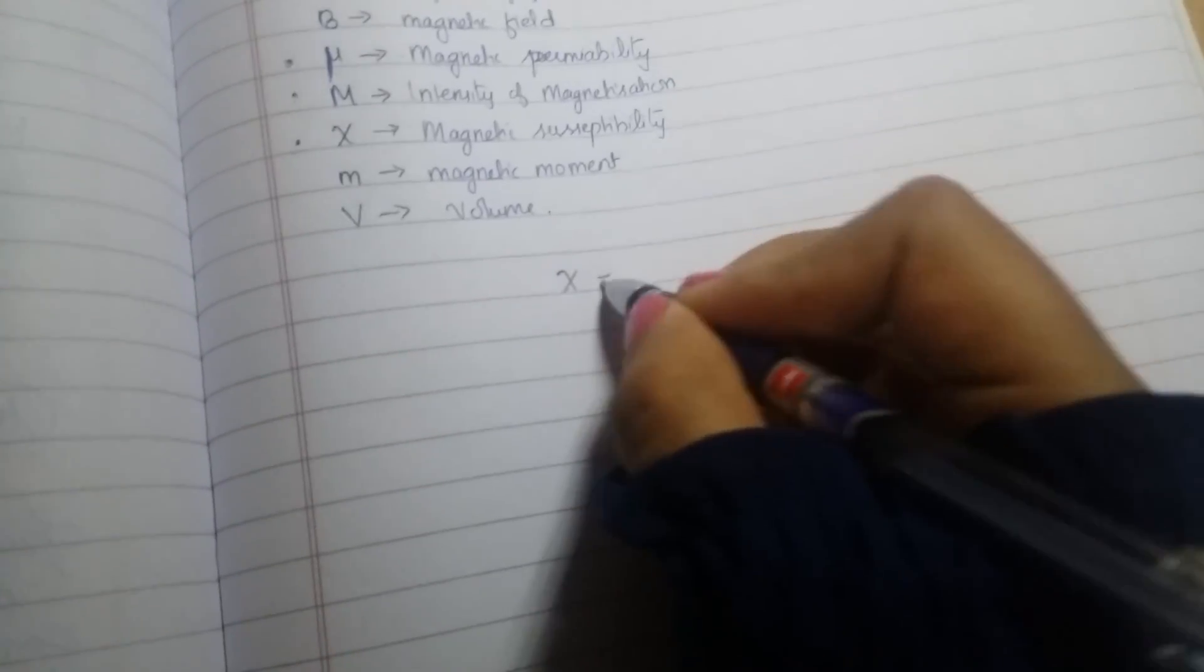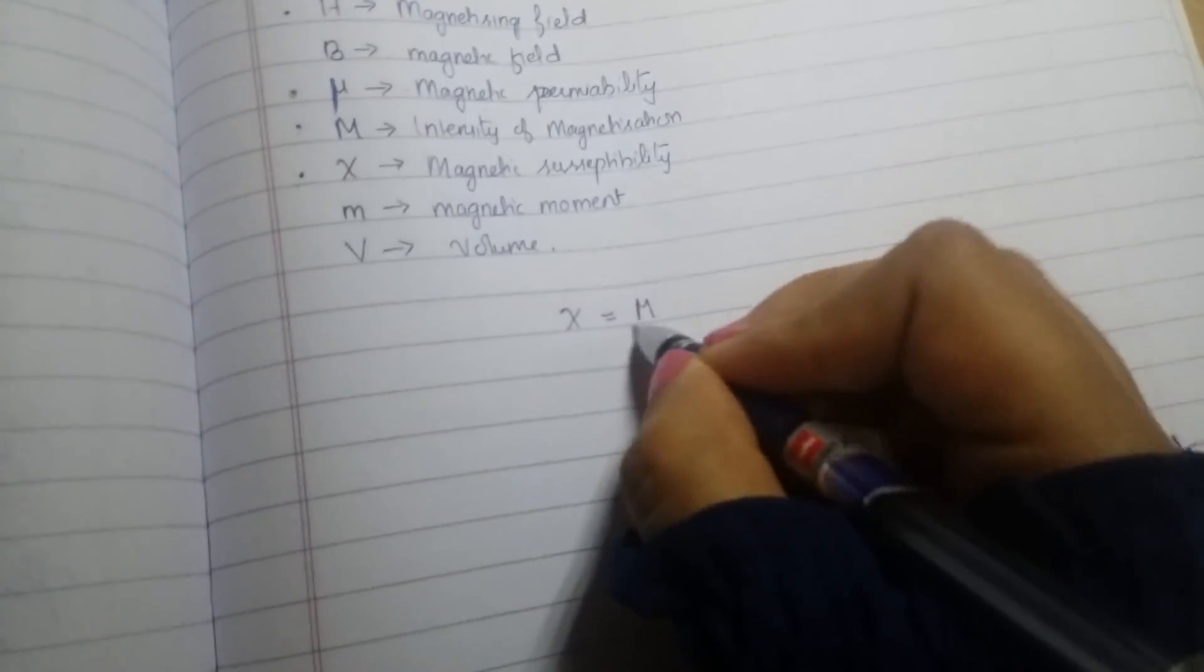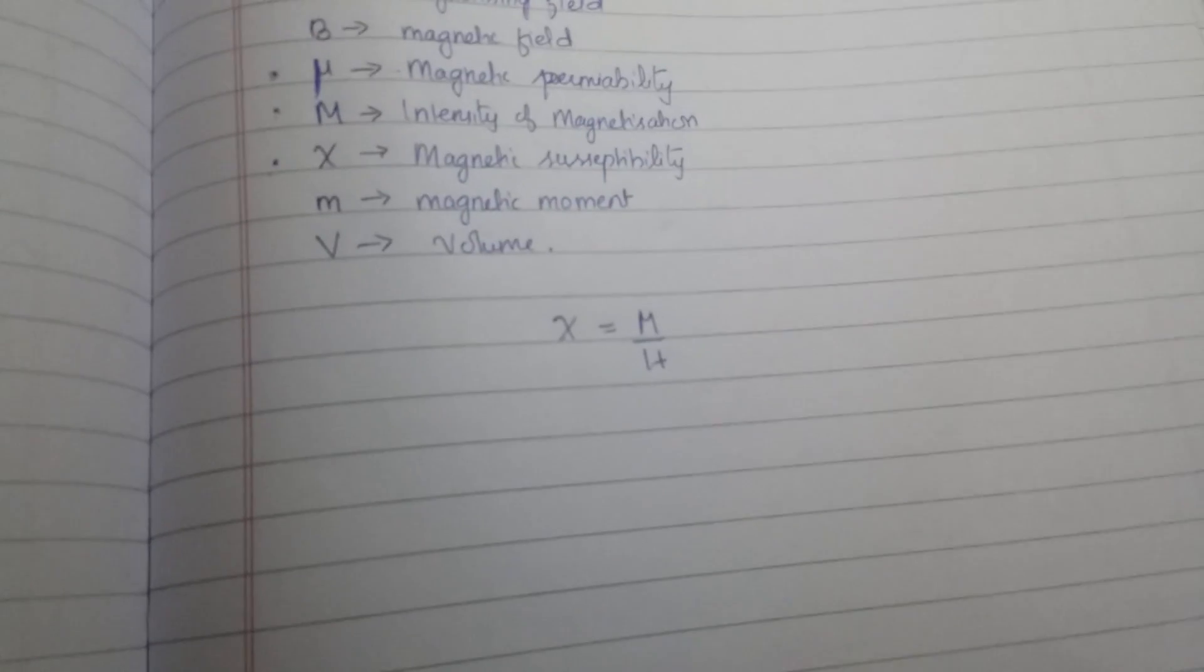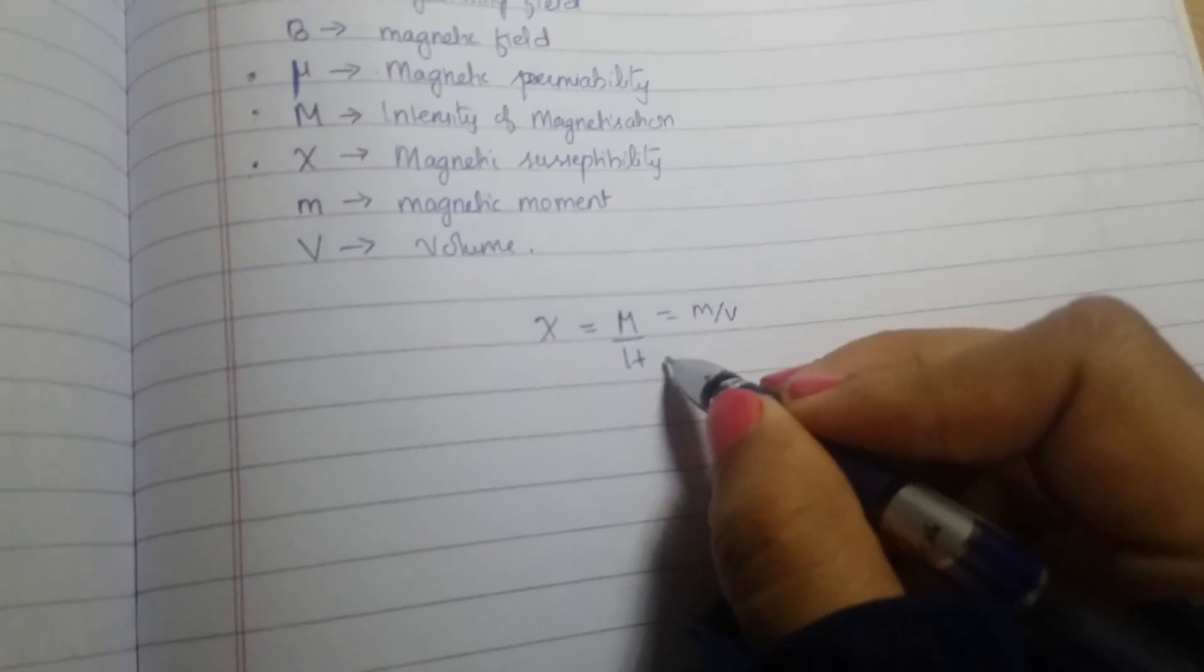Chi will be equal to M by H, and M will be equal to m by V.